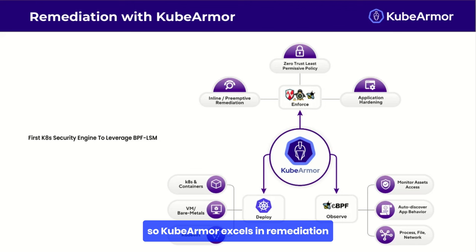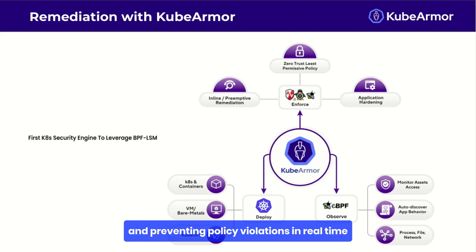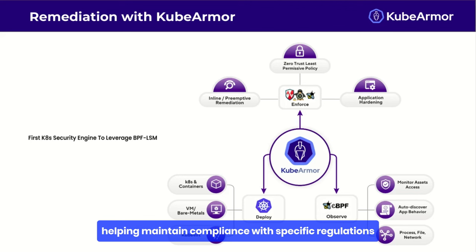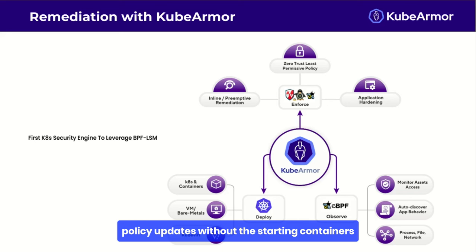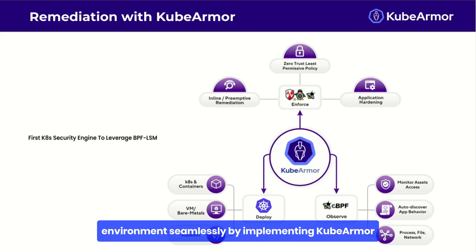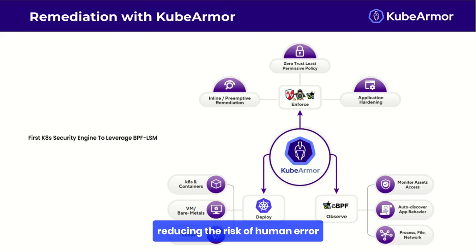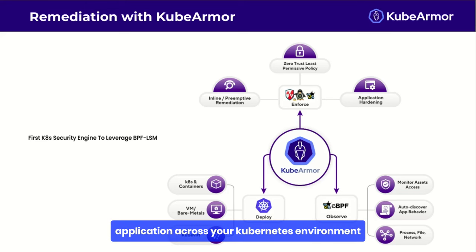KubeArmor excels in remediating compliance issues by enforcing security policies and preventing policy violations in real time, providing granular control over container interactions to help maintain compliance with specific regulations, offering visibility into container behavior for auditing and compliance reporting, allowing dynamic policy updates without restarting containers, enabling rapid response to new compliance requirements, and integrating seamlessly with existing Kubernetes environments. By implementing KubeArmor, you can automate much of your compliance enforcement, reducing the risk of human error and ensuring consistent policy application.